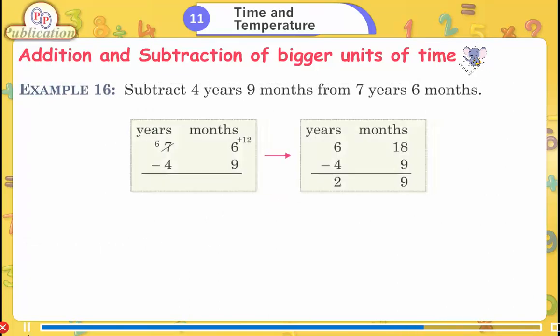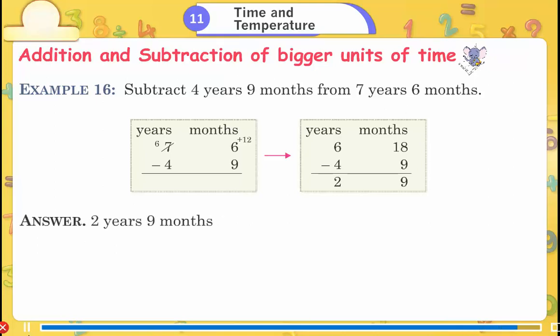Example 16: Subtract 4 years 9 months from 7 years 6 months. Answer: 2 years 9 months.